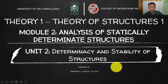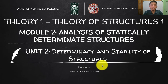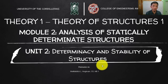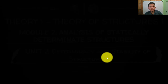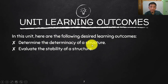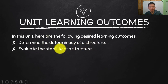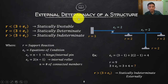Now referring to determinacy and stability of structures — this is very important. We need to categorize the type of structure, since simpler determinate structures can be analyzed using only fundamental equilibrium equations, which is the focus of Theory One. Indeterminate structures require additional equations and are covered in Theory Two. In this unit we will determine the degree of determinacy and evaluate the stability of structures.